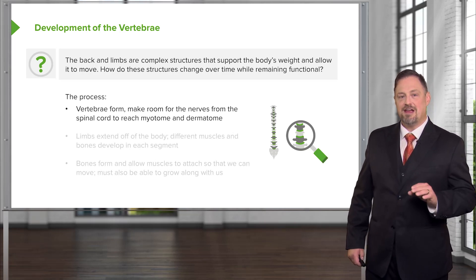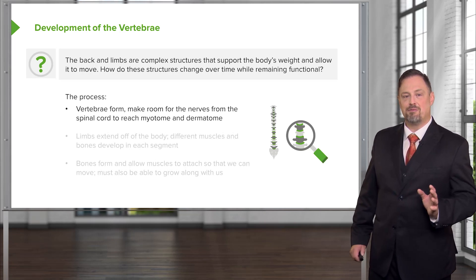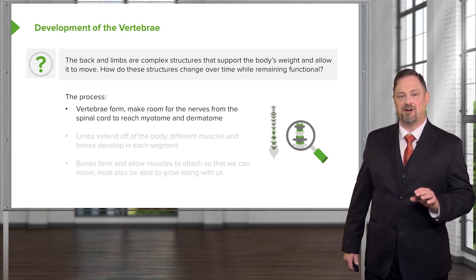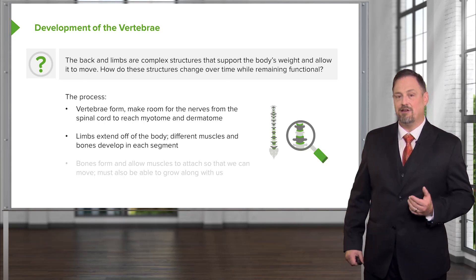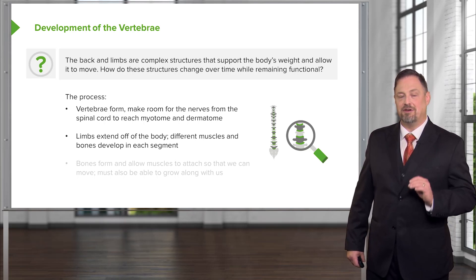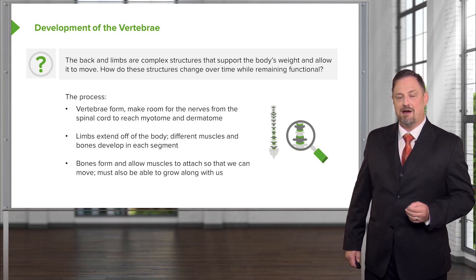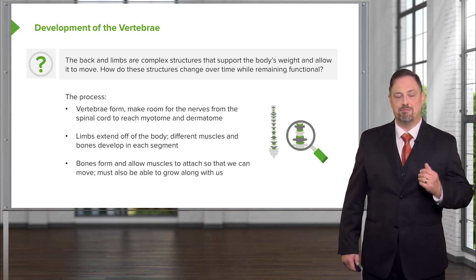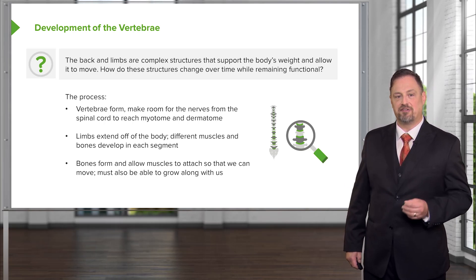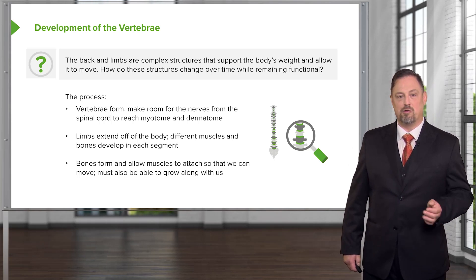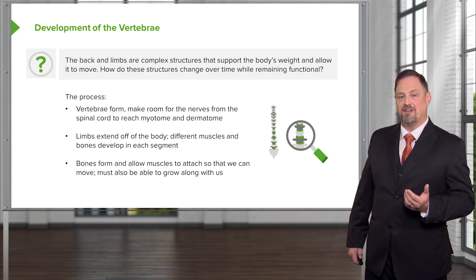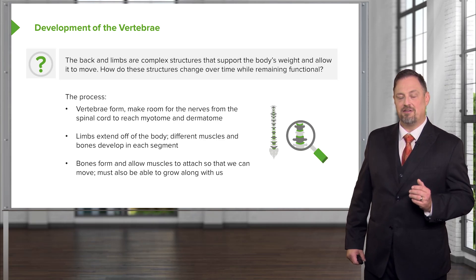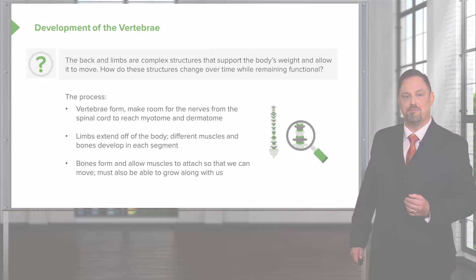In the process, we're going to see how the vertebrae form but take on different conformations as they get larger and larger but still protect the spinal cord. The limbs that grow off the body will be discussed after we discuss the back, and we'll follow not only the bony formation but also the muscles that allow coordinated movement to occur. And once they've formed, we've also got to allow them to grow and develop as we do.